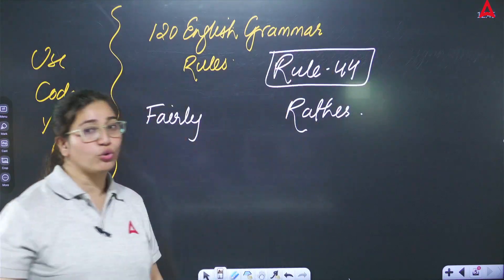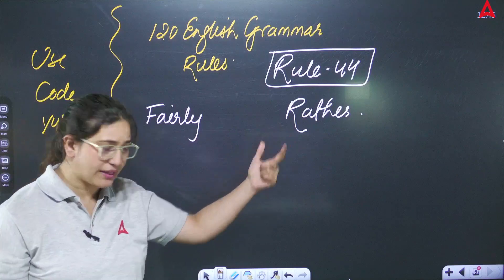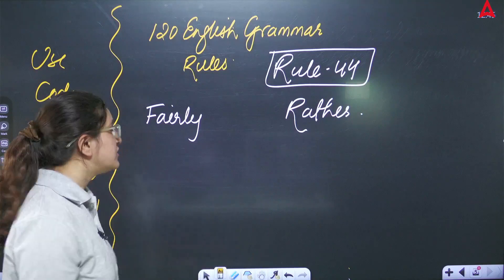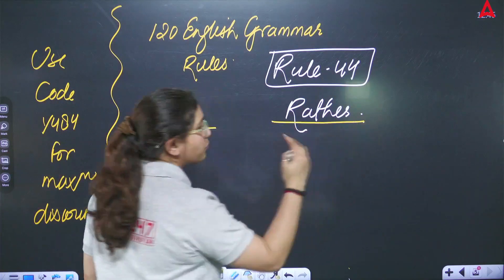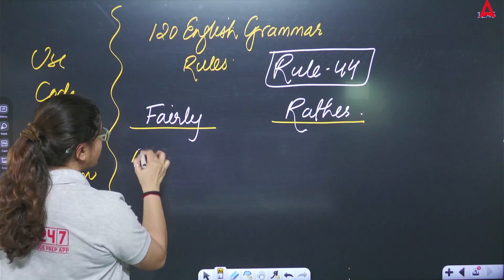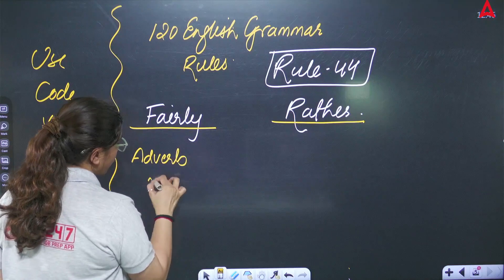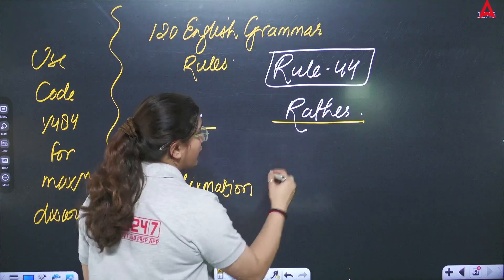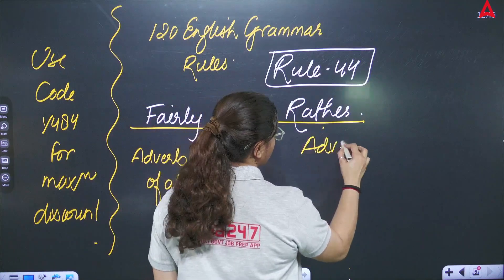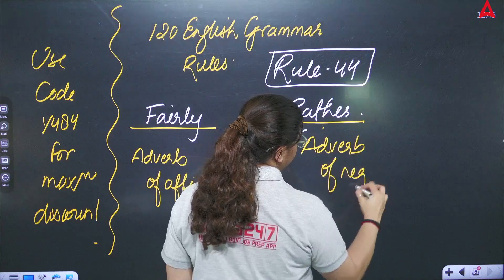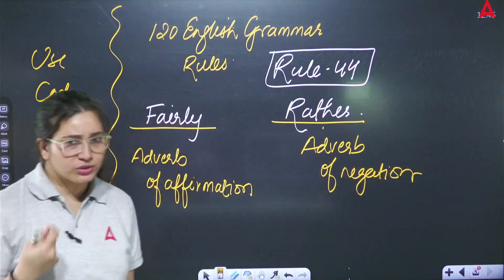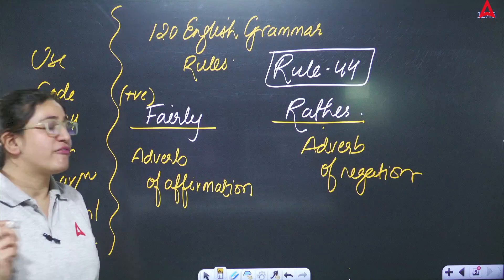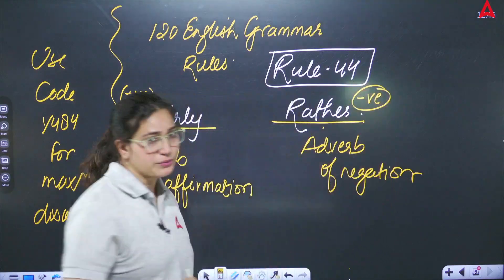We cover two words: one word is fairly and one word is rather. If I talk about adverbs, adverbs have multiple types which are adverbs of affirmation and negation. So fairly is a word which you consider adverb of affirmation, right? And rather is adverb of negation. So there is a small difference. Fairly is always used with positive words and positive sentences, whereas rather is used with negative words and negative sentences.